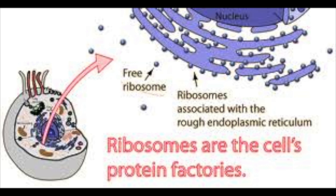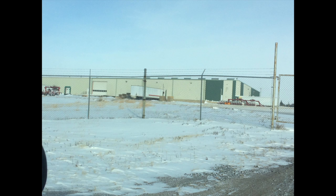Cytoplasm is a small cytoplasmic structure on which cells make their own proteins. We are comparing it to a factory. A factory makes products like a ribosome makes its proteins.